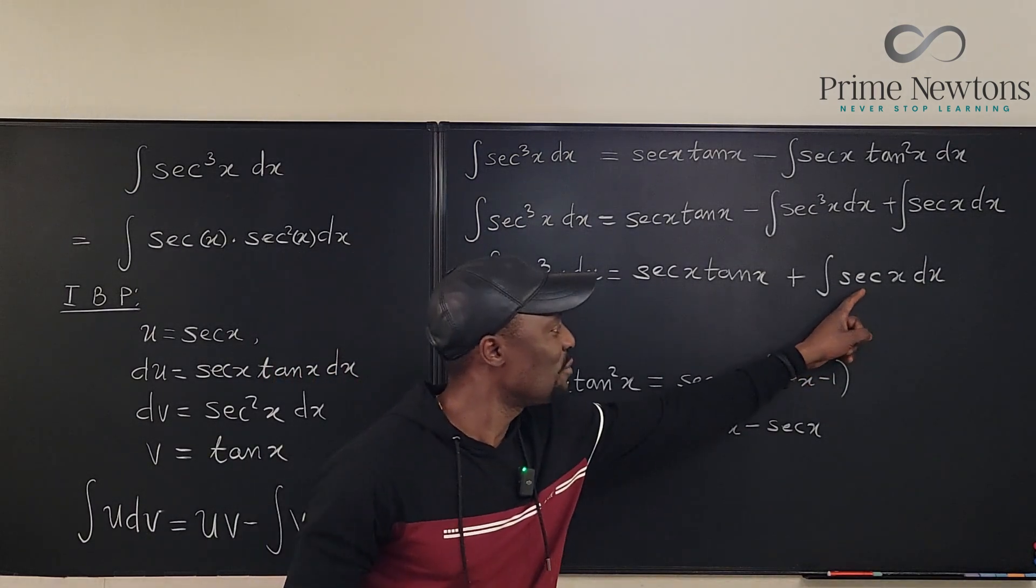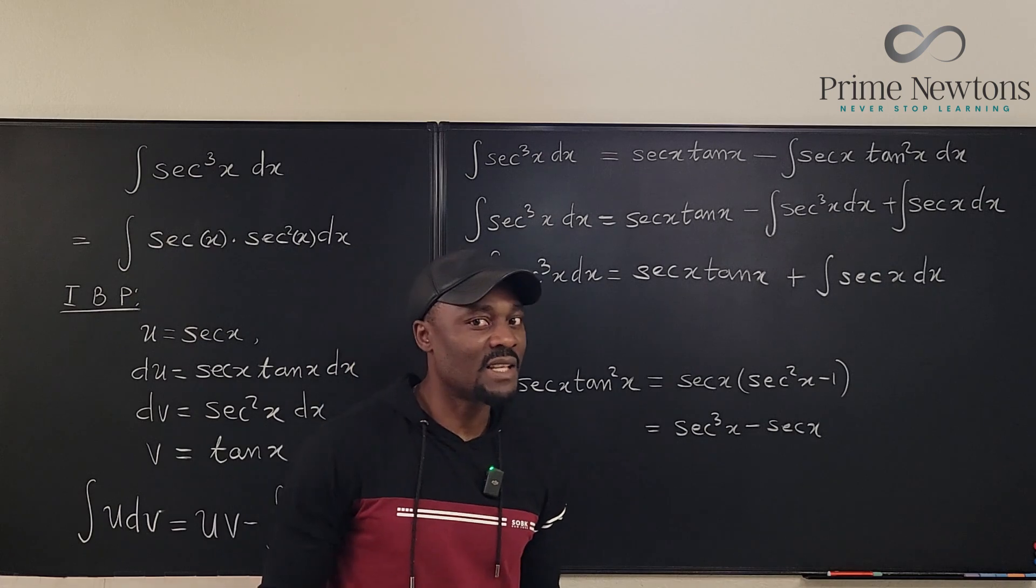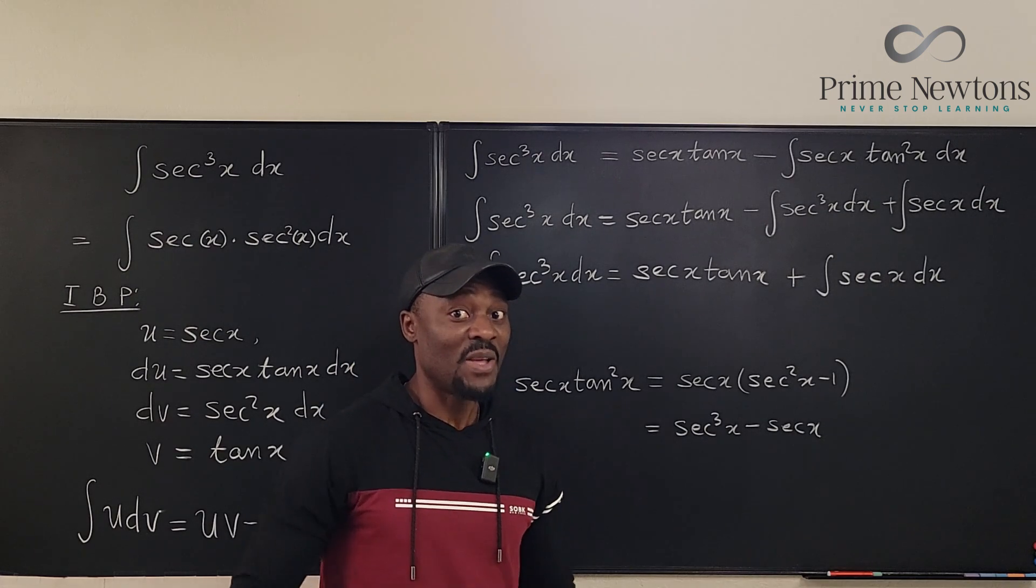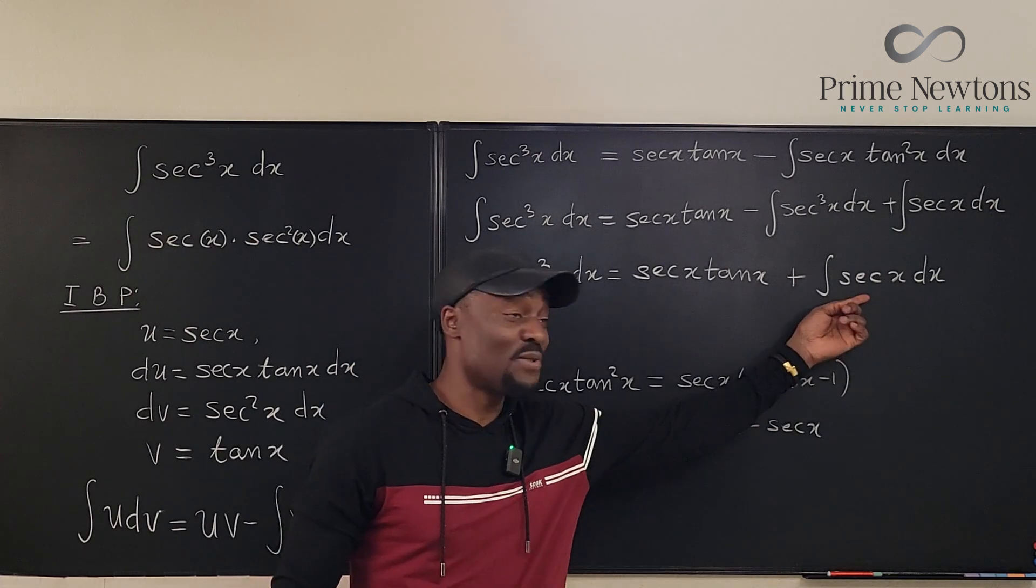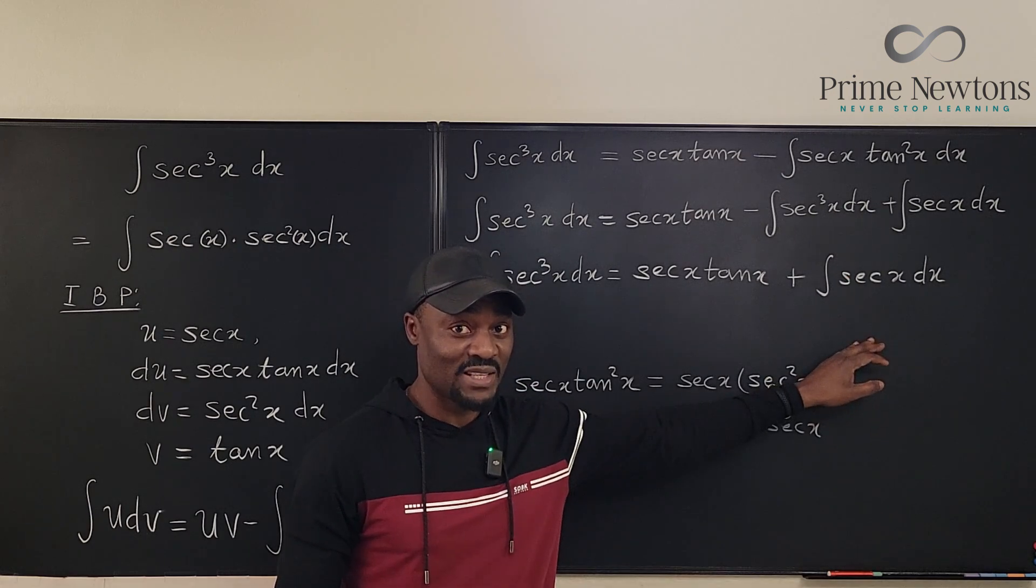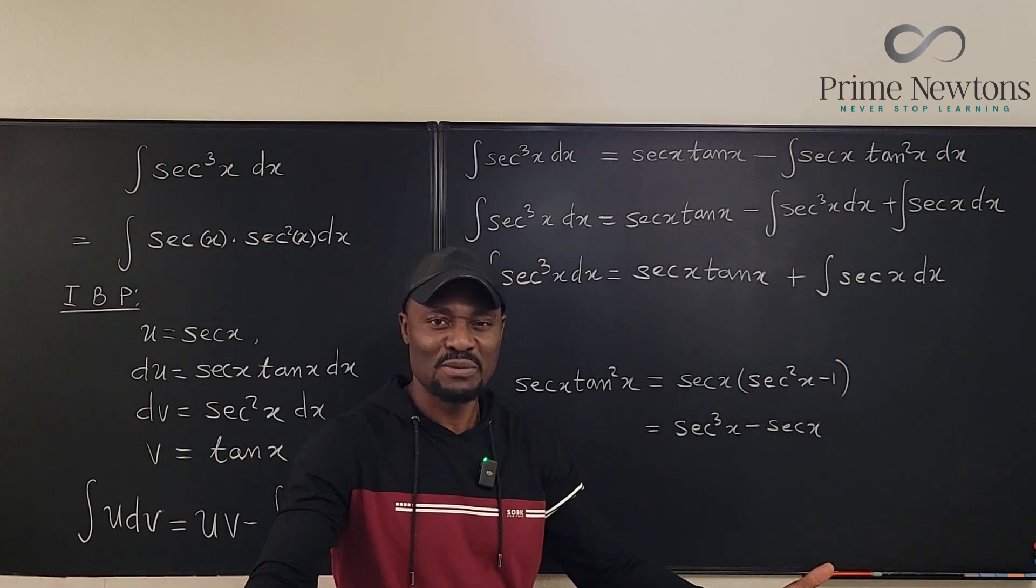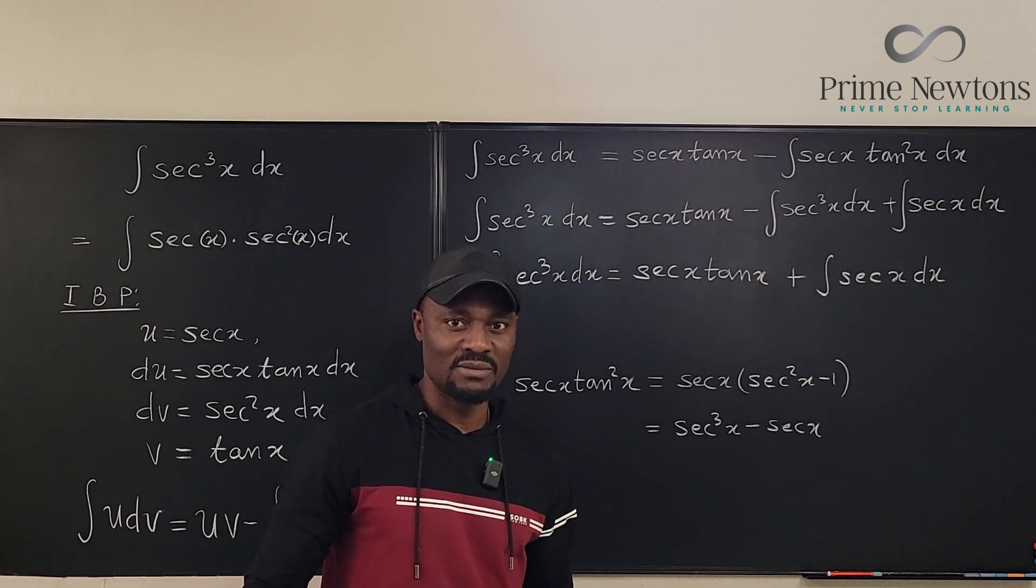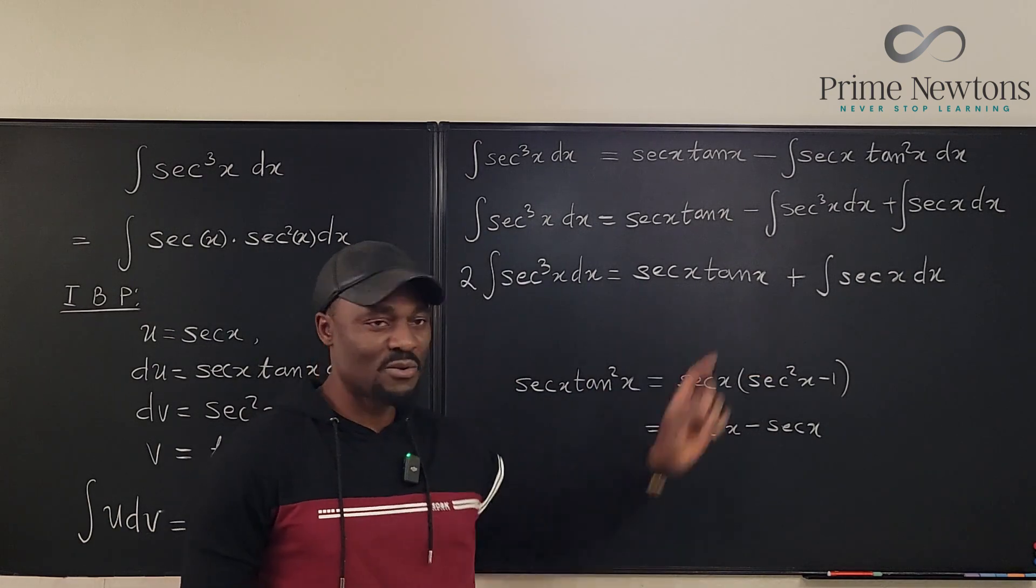So we're almost done. The only thing remaining is we need to be able to integrate secant x. Now, that's where I said it is better if you have this also memorized. Because now you have to go through the process of integrating this. It's just some basic u substitution and some manipulation. Let's do that here. And then we're going to write the answer there.